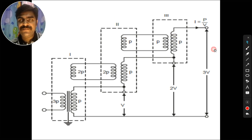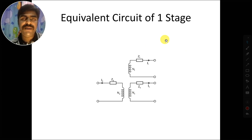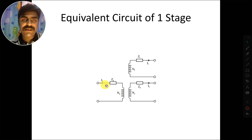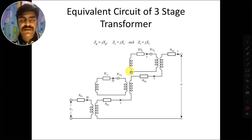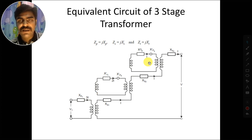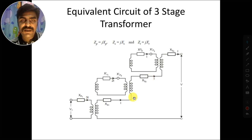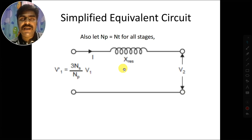Looking at the equivalent circuit of one stage, this shows the primary current, primary impedance, secondary impedance, secondary current, primary turns, and secondary turns. When we combine all three stages — first, second, and third — this gives us the equivalent circuit of all three stage transformers. It is also clear from this that the secondaries of all three transformers are connected in series. This leads to the simplified equivalent circuit.